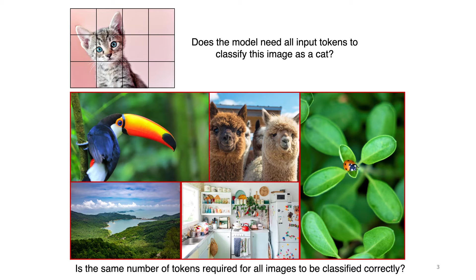Now, look at these images at the bottom of the page. Is the same number of tokens required for all of these images to be classified correctly? Well, definitely not. And that is why we propose our adaptive token sampling approach.